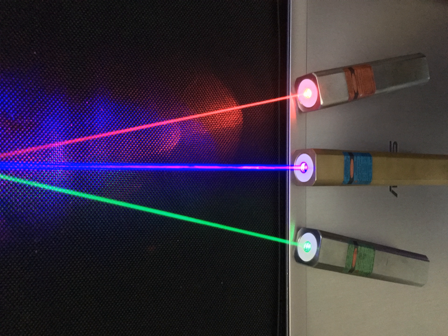A laser pointer or laser pen is a small handheld device with a power source, usually a battery, and a laser diode emitting a very narrow, coherent, low-powered laser beam of visible light, intended to be used to highlight something of interest by illuminating it with a small bright spot of colored light.